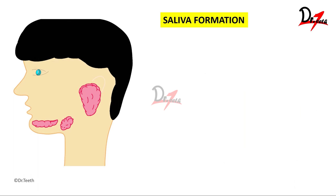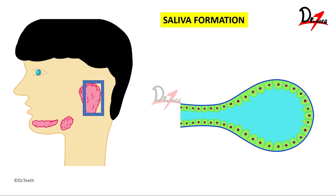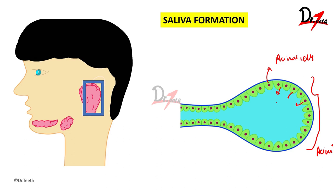Regarding the formation of saliva, if we take a cross section of a salivary gland and observe it under the microscope, it consists of a basic secretory unit called the acinar cells. These acinar cells together form an acinus, and these cells secrete a fluid mainly consisting of water, electrolytes, mucins, and certain enzymes.